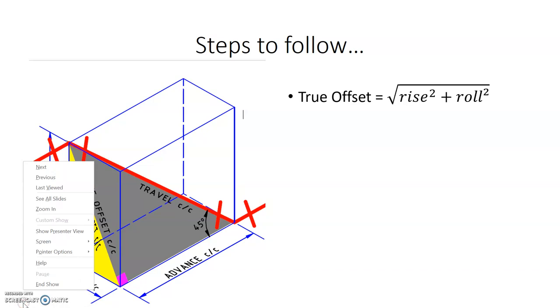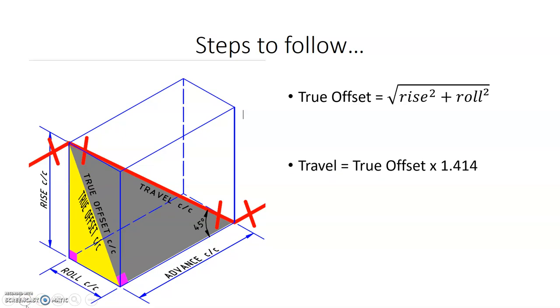Once we have the true offset, then we can find our travel. Our formula for travel is our true offset that we just calculated times 1.414. So the same 1.414 that we use for the travel for a single offset. The only difference is we're taking the true offset number, not the offset. We're using a true offset number and times it by the 1.414.